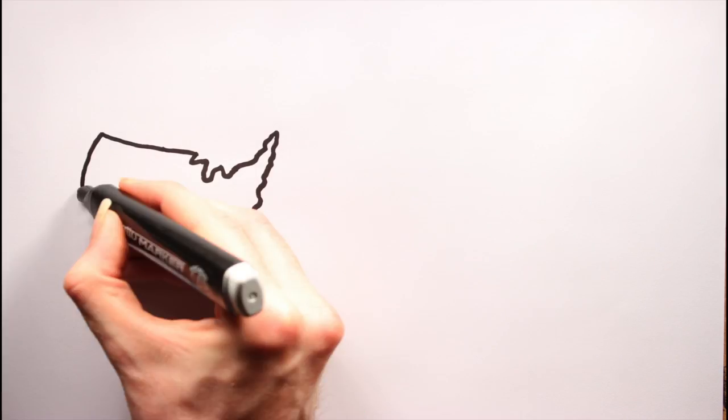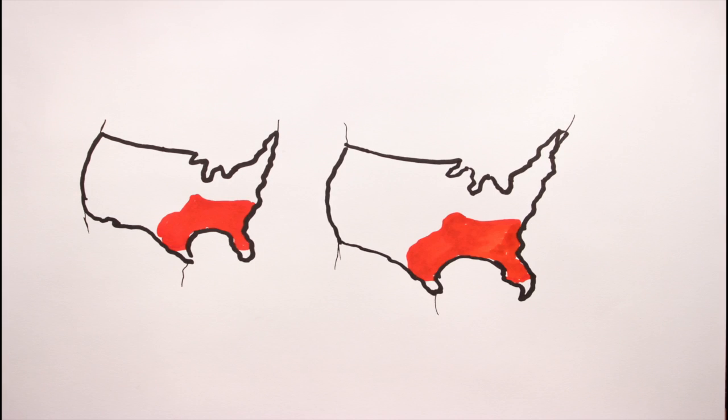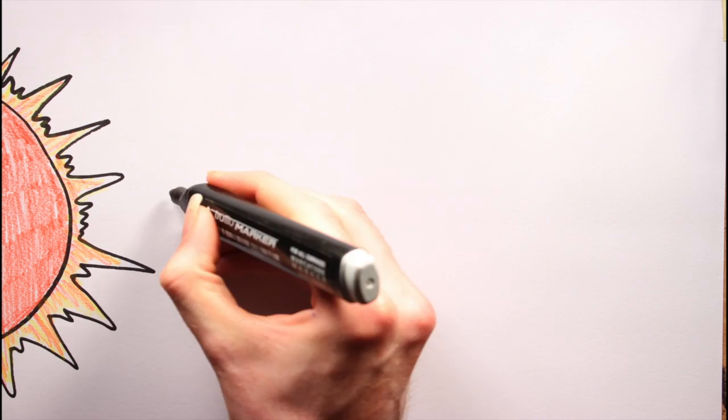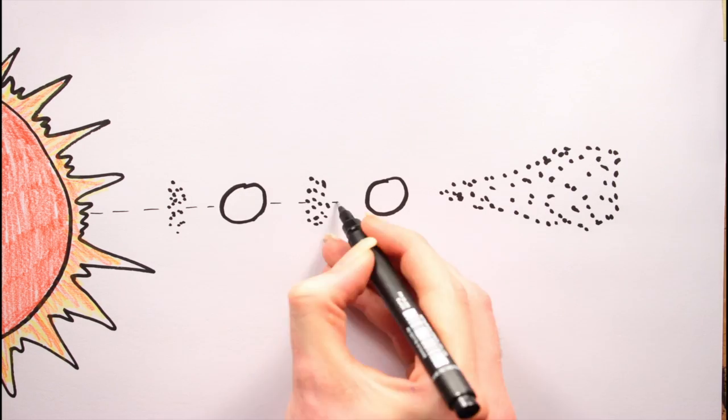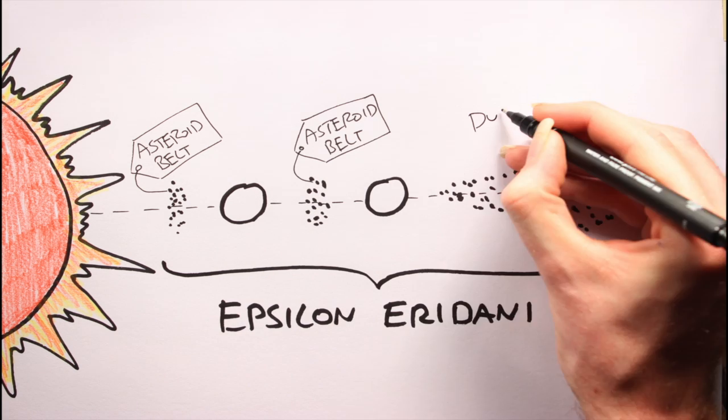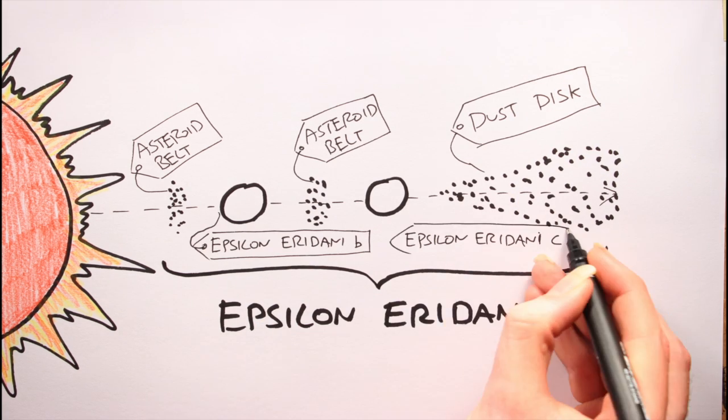Dusty Systems. Can a planetary system have more than one asteroid belt? Yes, indeed it can. The nearest planetary system to us, the Epsilon Eridani system, boasts not just a badass name, but two asteroid belts and a dust disk to boot.